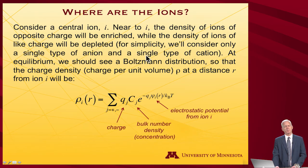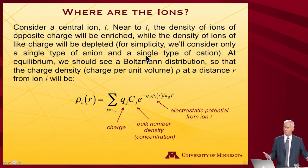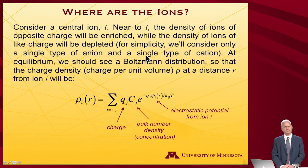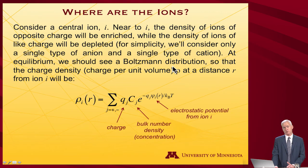To keep things simple, let's only consider one anion and one cation — it will be complicated enough with just those two. At equilibrium, we expect a Boltzmann distribution.